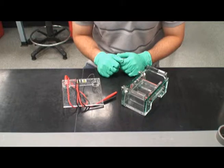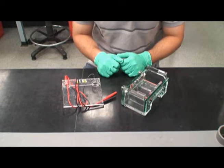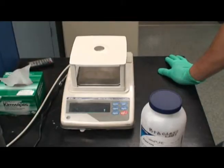A proper agarose gel contains 1% agarose. Therefore, 1 gram of agar is added to 100 milliliters of buffer TBE to make a correct ratio.